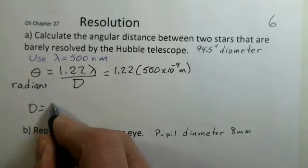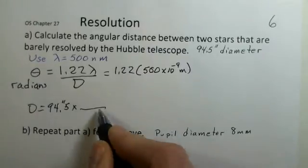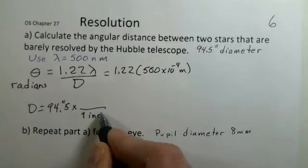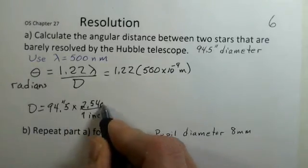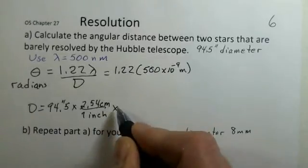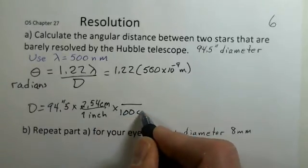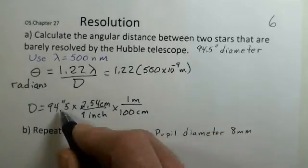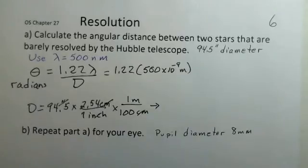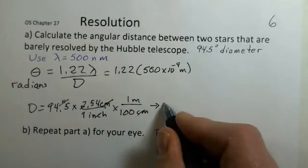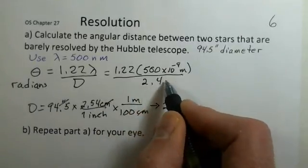Our diameter would be 94.5 inches. Let's first go to centimeters. We need to cancel the inches, so I'm going to put inch in the denominator. We have 2.54 centimeters for one inch. Then we want to convert from centimeters to meters. The inches cancel, the centimeters cancel. I came up with 2.4 meters. Now I have a number to use in this calculation for the diameter.